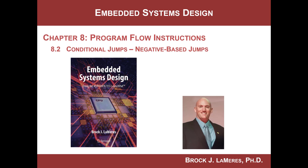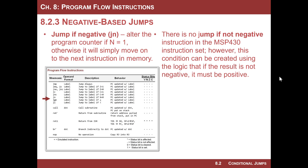Hey, this is Brock Lemires, and we're continuing our study of embedded systems design by looking at program flow instructions. In this video, we're going to look at negative-based jumps, meaning that we will look at the N flag within the status register to determine whether we jump or not. The MSP430 provides one negative-based jump called Jump If Negative, or JN.